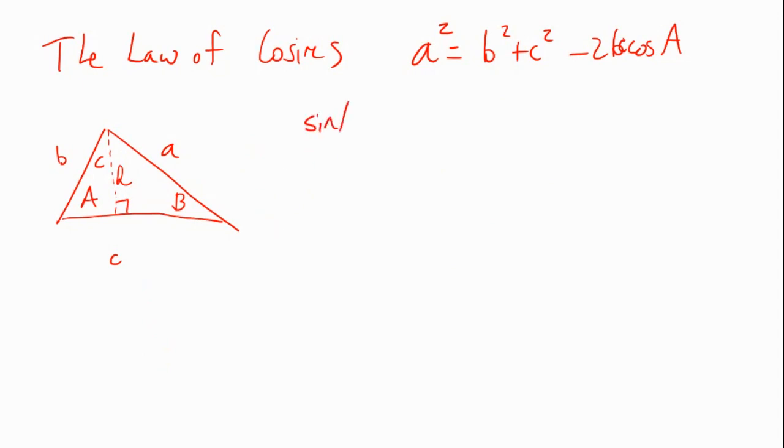The sine of A is opposite, which is H, over the hypotenuse, which is B, which tells me that H equals B times the sine of A. So far this is the same thing we did when doing the law of sines explanation. But now I want to take the cosine of A. Naturally, I want to take the cosine of A because this is the form of the law of cosines I'm trying to derive.